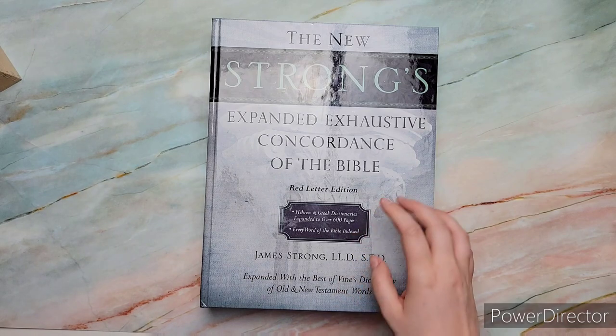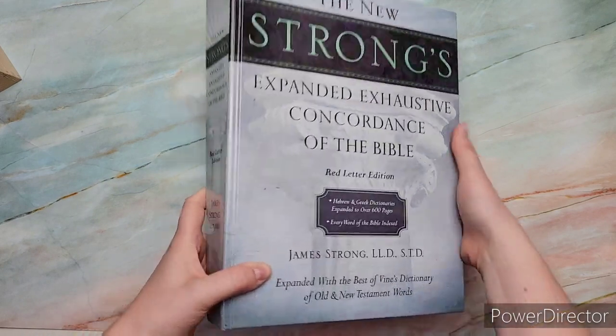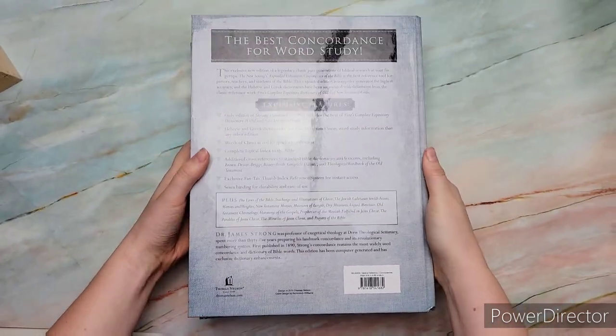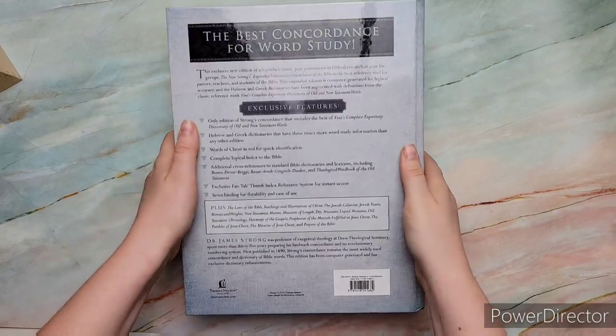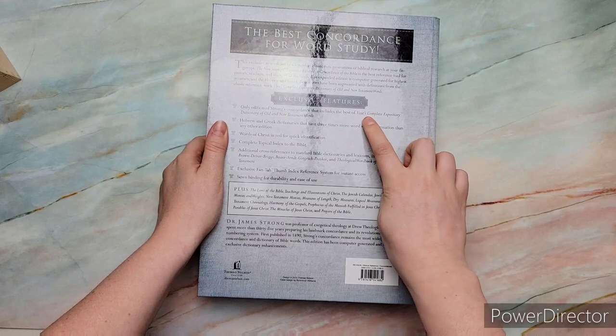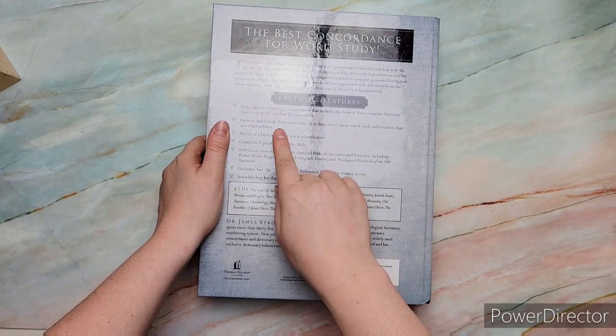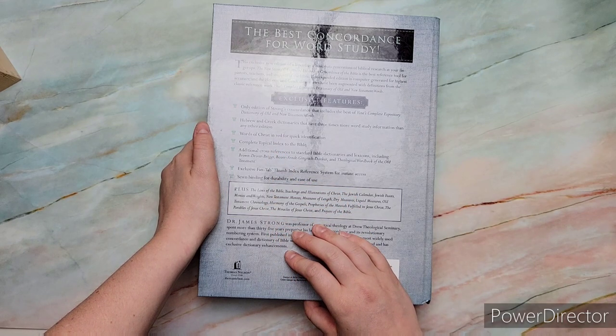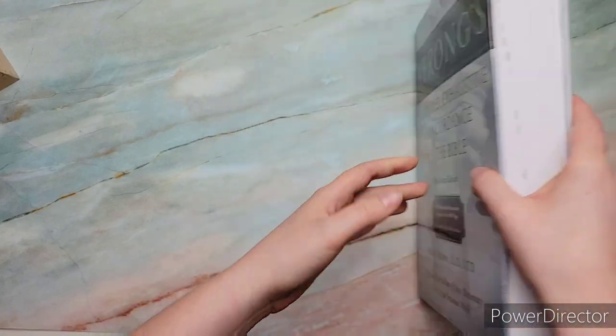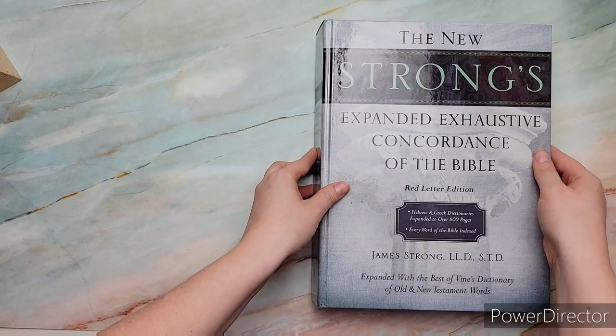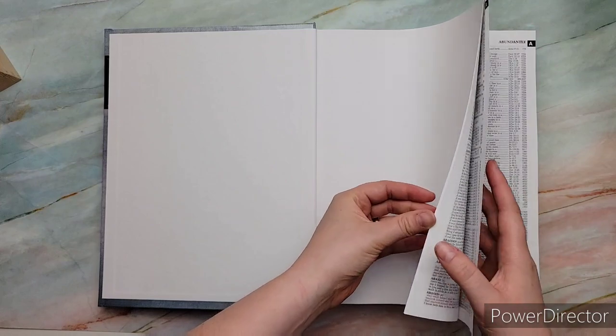But I think for Bible study, if you are not one to do digital, like the Blue Letter Bible that I show how to use, I think this is great. It's the only edition of Strong's Concordance that includes the Vines Complete Dictionary of the Old and New, has Hebrew and Greek dictionaries, has three times more study information, Words of Christ in Red, Complete Topical Index, additional cross-references to standard Bible dictionaries and lexicons, and all that jazz.